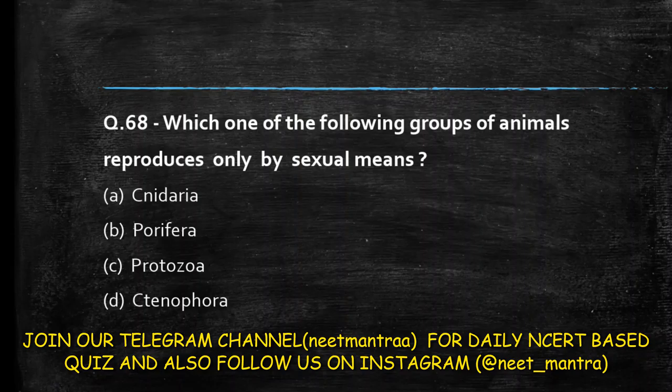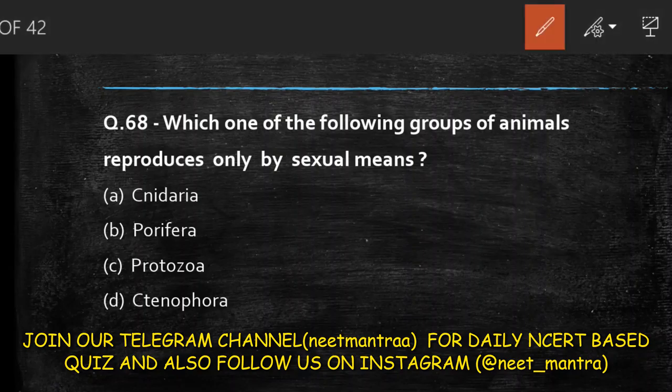Next question: which one of the following group of animals reproduces only by sexual means? Options are Cnidaria, Porifera, Protozoa, or Ctenophora. Cnidaria, Porifera, and Protozoa all show both sexual and asexual reproduction. But in Ctenophora, only sexual reproduction is observed. So the answer is option D: Ctenophora.